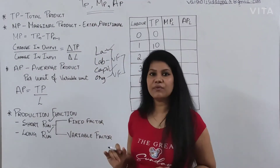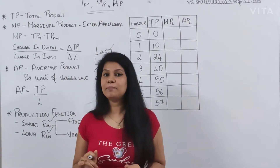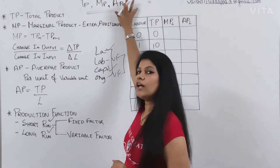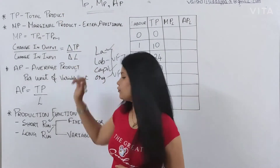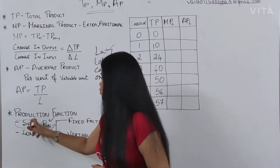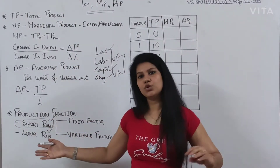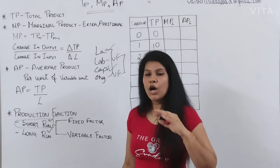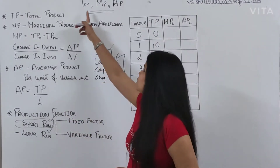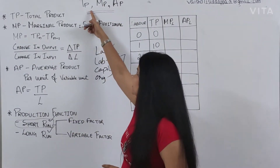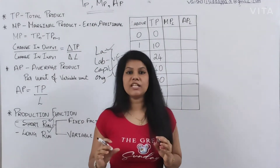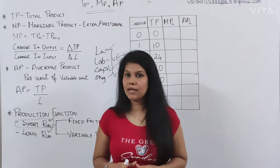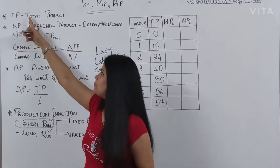Right now, the theory we have picked explains total product, marginal product, and average product — these three are all concepts of the short run. In future classes I will talk about the long run. TP is nothing but total product, meaning whatever goods and services you are producing by using the factors of production — that is called total product.